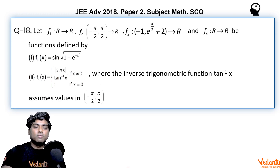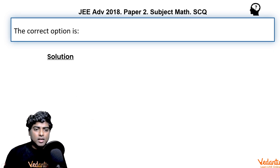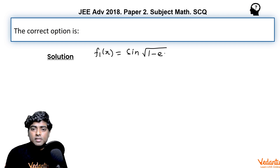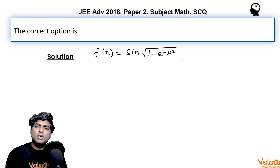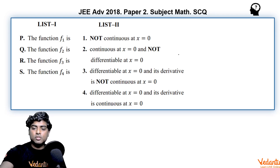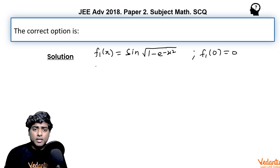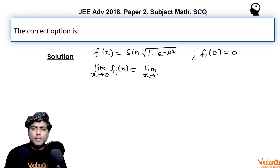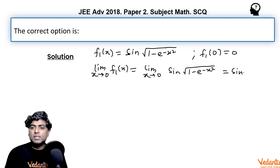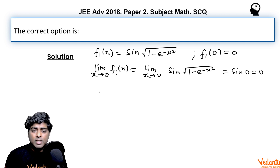Coming to f1: f1(x) = sin(√(1 − e^(−x²))). Everything is asked at x = 0. Checking continuity: f1(0) = sin(√(1 − 1)) = sin(0) = 0. The limit as x → 0 also gives sin(0) = 0 directly — there is no indeterminate form. So the limit exists and equals the function value, meaning f1 is continuous at x = 0.